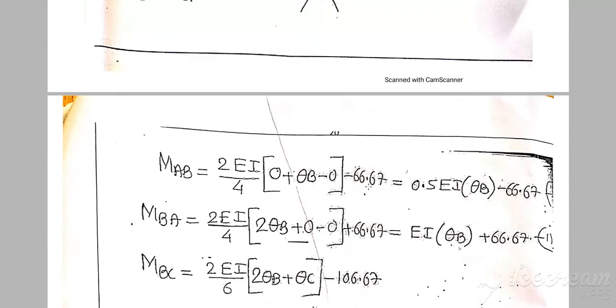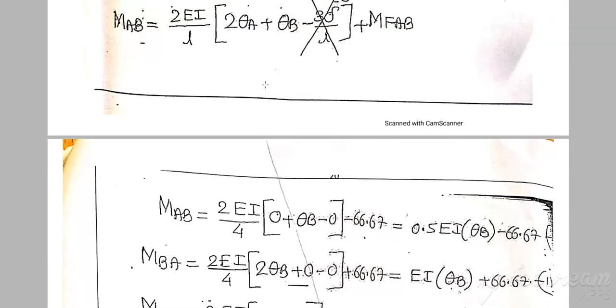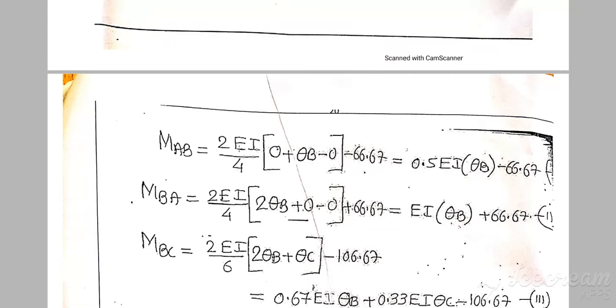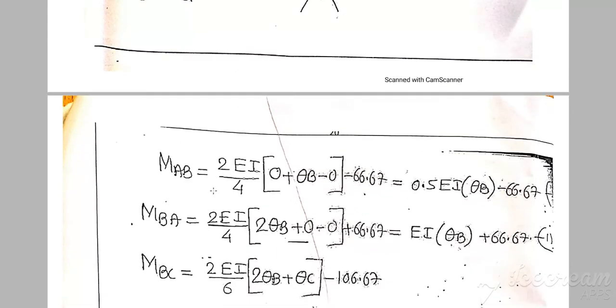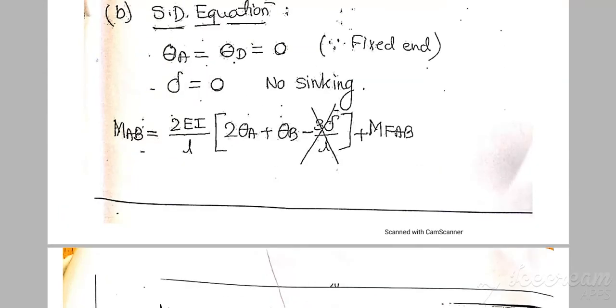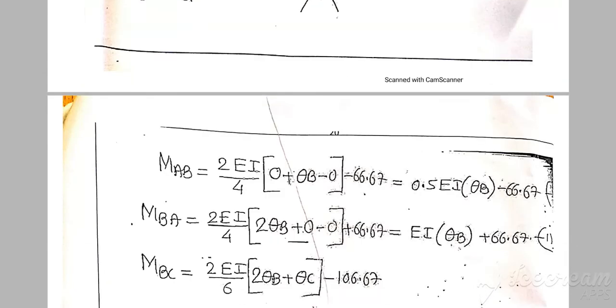The fixed end moment was already calculated, so substitute that answer here along with the remaining data. Moment AB = (2EI / 4) × (2·theta_A + theta_B). Since theta A is zero, substitute zero for theta A, keep theta B as it is, and you get the answer in terms of EI·theta_B.